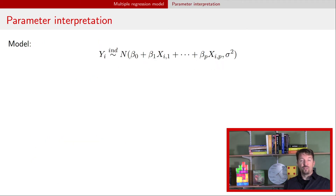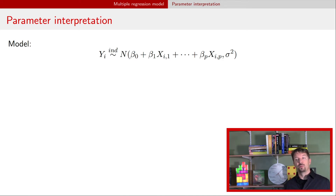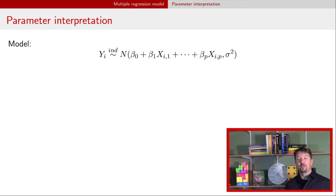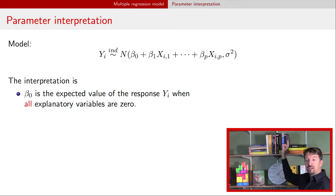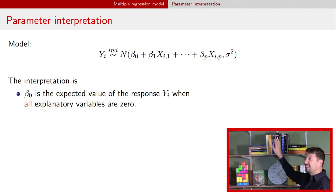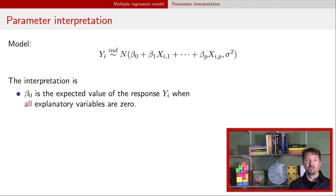The first thing I want to talk about is the model and the parameter interpretation within this multiple regression model. The intercept stays pretty much the same as in simple linear regression. Beta-naught, which we refer to as the intercept, is just the expected response when all of the explanatory variables are zero. If you plugged in zero everywhere you saw one of the x's, all the other terms would disappear and we'd be left with just beta-naught for that mean.